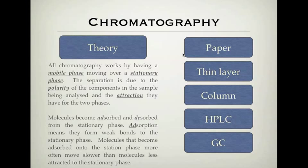Just a quick recap if you missed the first one on paper and thin layer and the basic theory. Chromatography works by having a mobile phase moving over a stationary phase. Separation is due to the polarity of the compounds or components in the sample being analyzed. Things with different polarity will be attracted differently to the phases and be separated out. The key word here is adsorbed, where weak bonds are formed to the stationary phase.